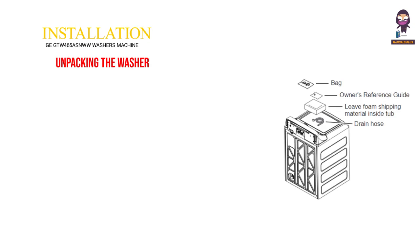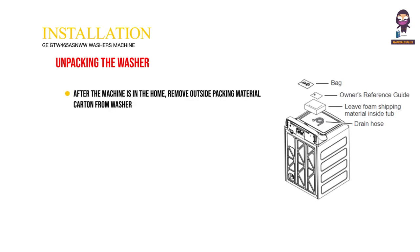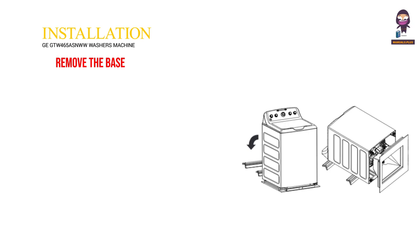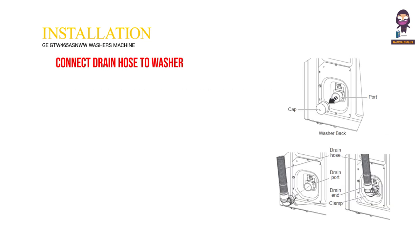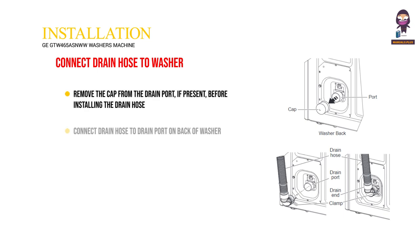Installation — Unpacking the washer: After the machine is in the home, remove the outside packing material carton from the washer. Remove the bag, drain hose, and owner's reference guide from the tub. Remove the base from the unit by placing your foot on the side of the base and tipping the unit back on the corner post. Remove the base and bring the washer back upright. Connect the drain hose to the washer: remove the cap from the drain port if present before installing the drain hose. Connect the drain hose to the drain port on the back of the washer.